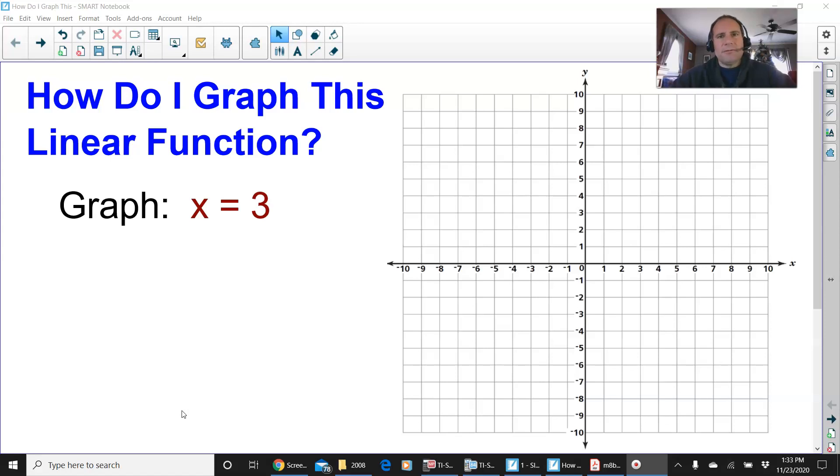We all know that y equals mx plus b is the equation of a line in slope intercept form, and it's easy to identify the slope and the y-intercept of a line of say y equals 2x plus 1. But what about if you have x equals 3? What do you do? Can't put it into the graphing calculator, but this type of line is very easy if you know this one little trick that I'm going to share with you.